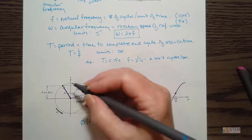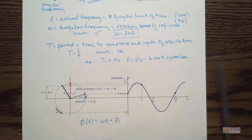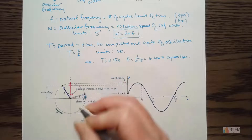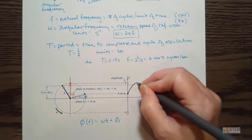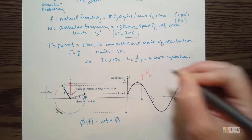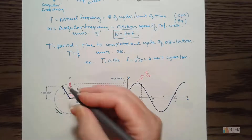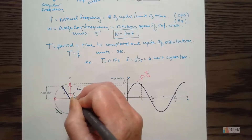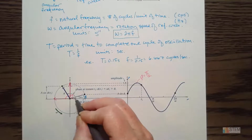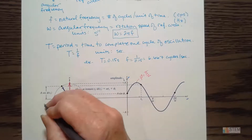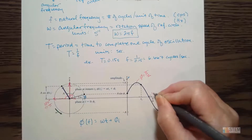At t equals zero, the phase is phi sub i. If my phasor is up at the top of the circle, the angle between the horizontal and the vertical is 90 degrees, so our phase at that point would be pi over 2. If the phasor is over on the left side, that's 180 degrees — pi radians — so the phase would equal pi.